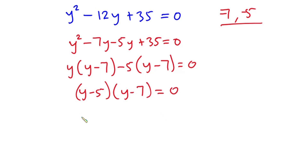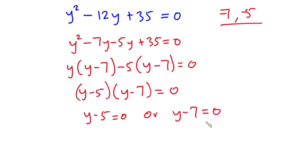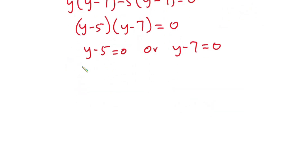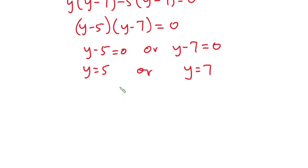From here we can say y minus 5 equals 0 or y minus 7 equals 0. Making y the subject, we get y equals 5 or y equals 7. But don't forget that we let y equal 2 to the power x/2.